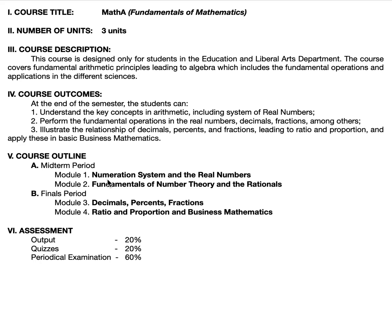Module 1 is Numeration System and the Real Numbers, Module 2 is Fundamentals of Number Theory and the Rationals, Module 3 is Decimals, Percents, and Fractions, and Module 4 is Ratio and Proportion and Business Mathematics. Module 1 is good for four weeks; at the end of Module 1, you'll be given quiz number one. Module 2 is also four weeks; at the end of Module 2, quiz number two — each quiz is 10% practically.